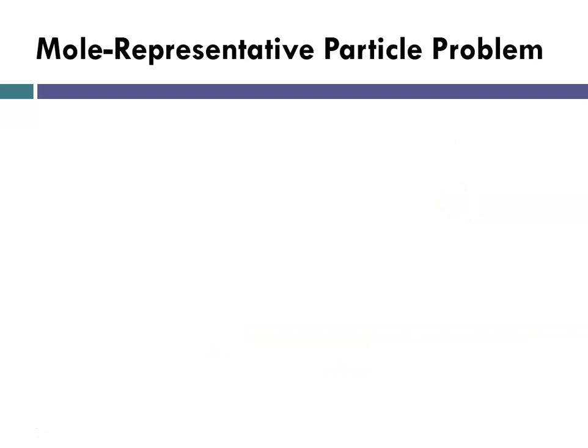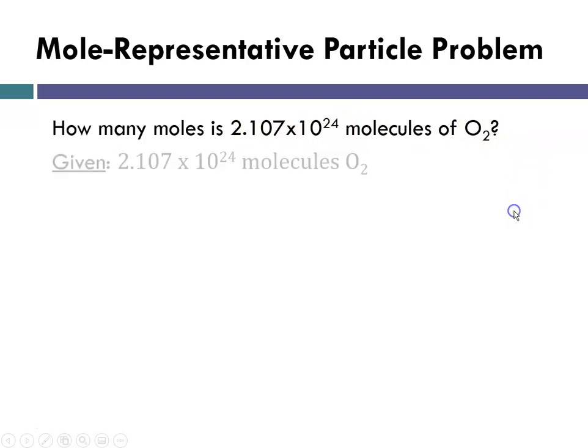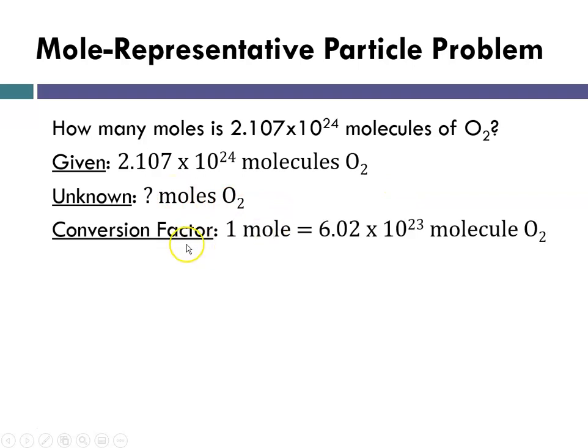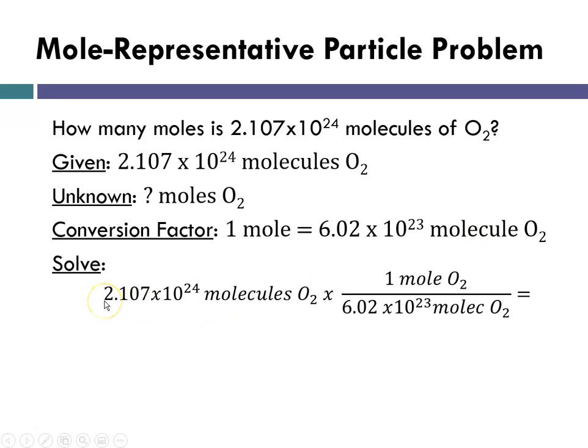And now I'm going to give you an example of a mole representative particle problem. How many moles is 2.107 times 10 to the 24th molecules of oxygen? So given 2.107 times 10 to the 24th molecules of oxygen, the unknown is how many moles is that? The conversion factor is 1 mole is equal to 6.02 times 10 to the 23rd molecules of oxygen. And we're going to solve. So we're going to say 2.107 times 10 to the 24th molecules of oxygen times 1 mole is 6.02 times 10 to the 23rd, making sure that our molecules cancels out. When we plug that into our calculator, we get 3.5 moles.